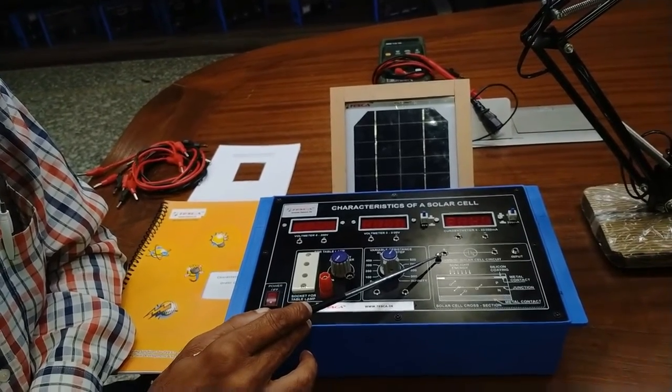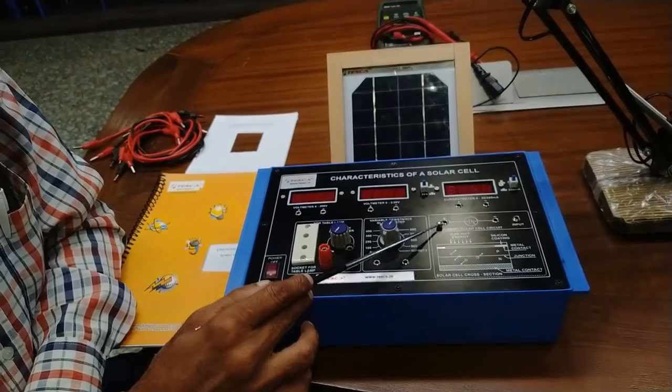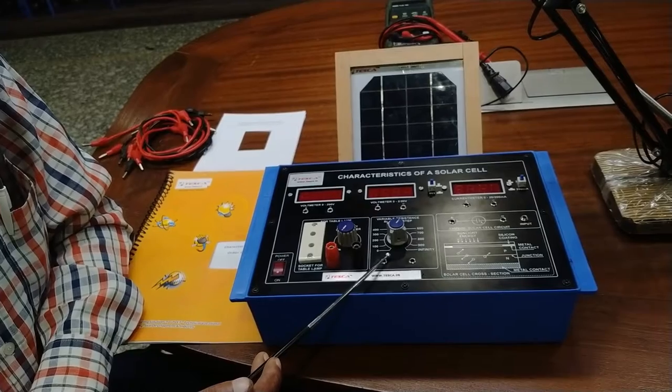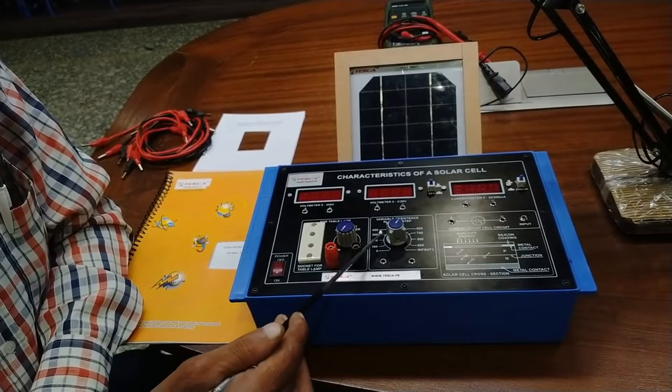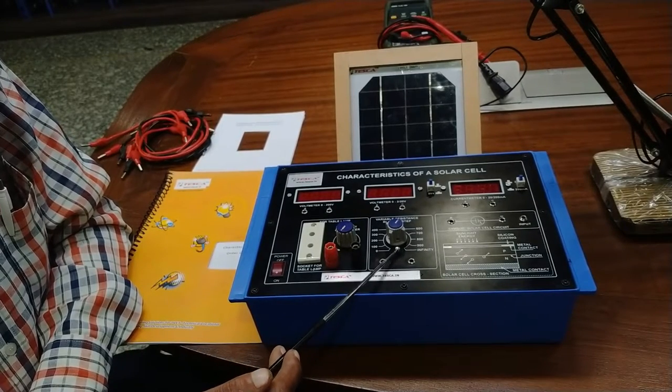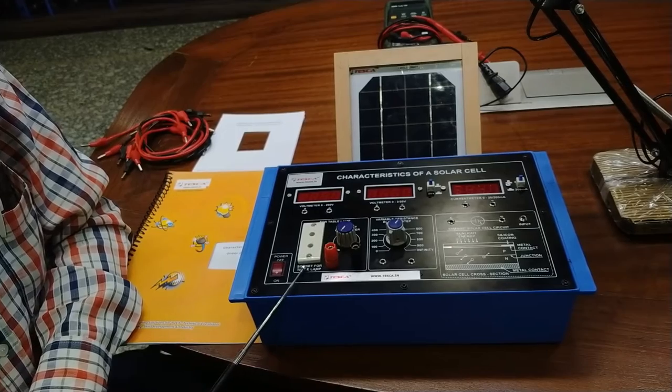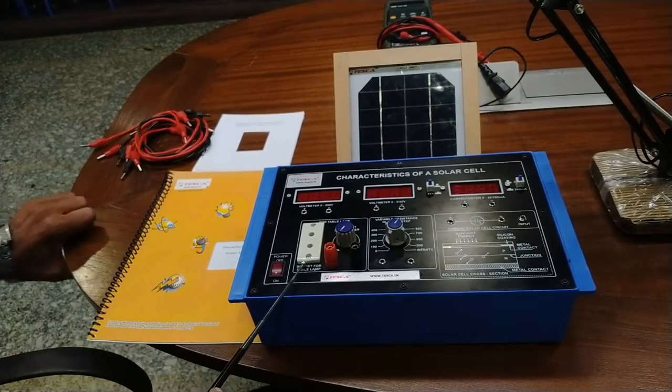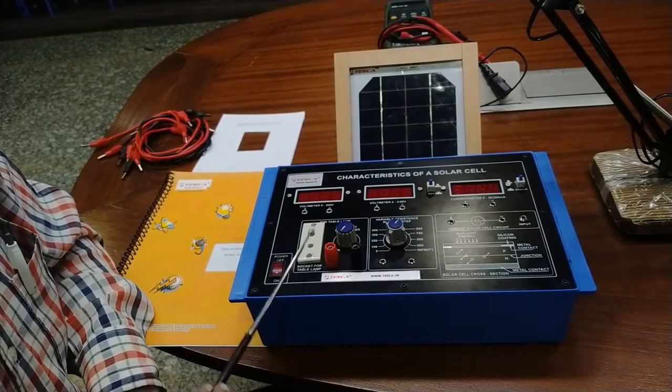This is the solar cell circuit. In this circuit, we will connect the circuit and taking output. We also provided variable resistance load to perform the experiment. Different different load, as per the manual, we can connect and disconnect and connections of socket of table lamp.